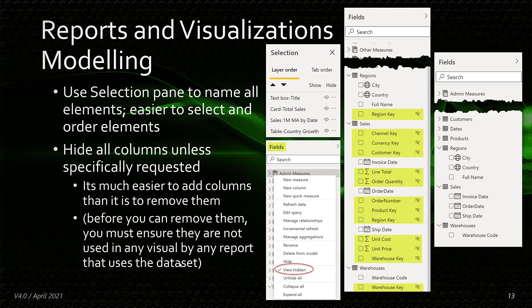I find that when I use the selection pane to name and order all visuals on my report page, iterative development is much easier, as I can select visuals for adjustments. Further, the ordering in the selection pane lets me visually see what's in front of or above one another, and the order can easily be adjusted.